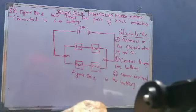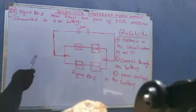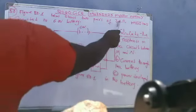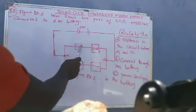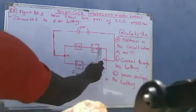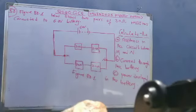We can go through the question together. The question reads: Figure 8.1 below shows two pairs of 3.0 ohm resistors connected to a 6.0 volt battery. Two pairs — this pair and that pair — connected to a 6.0 volt battery.